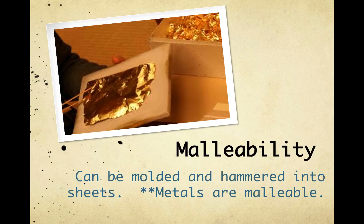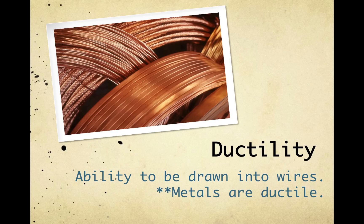The next property is malleability. Malleability is a property that allows substances to be molded and hammered into sheets. Metals are malleable. Ductility is the ability to be drawn into wires. Metals are also ductile.